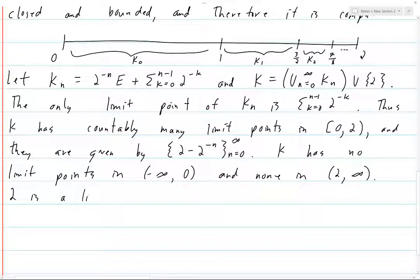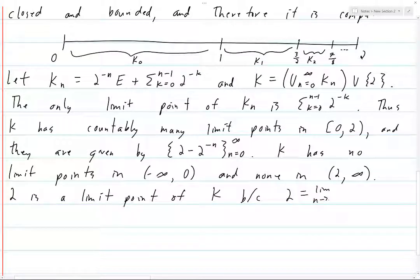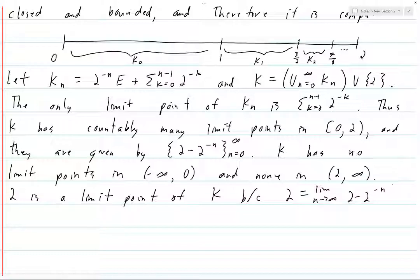What about 2 itself? 2 is a limit point of K because 2 is the limit as N goes to infinity of 2 minus 2^(-N). These points are contained in K — specifically, 2 minus 2^(-N) is contained in K_{N+1}.